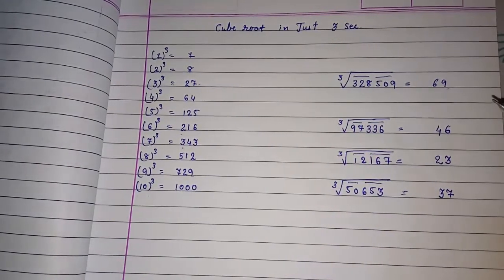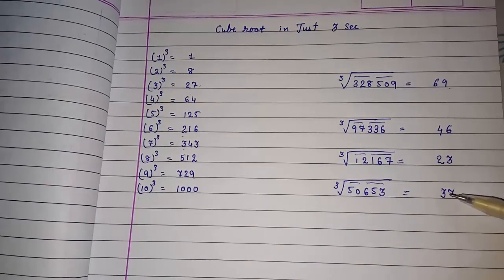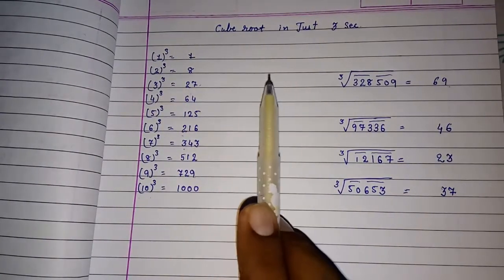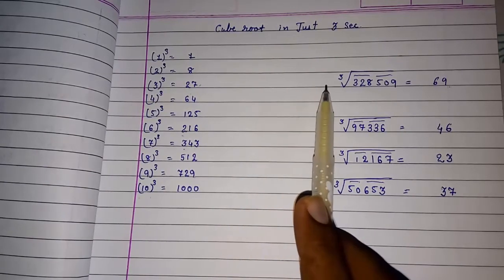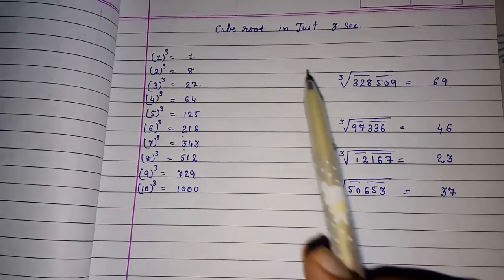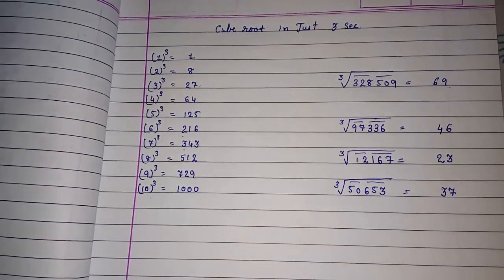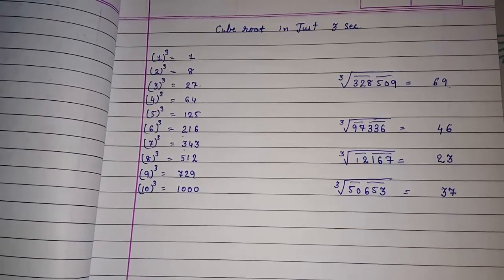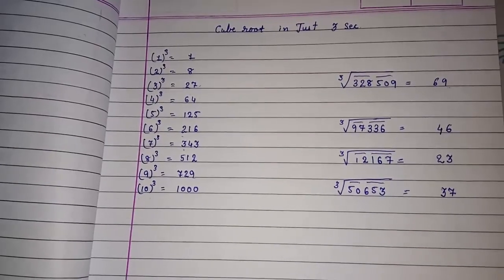And look how easily we had find out the cube roots without doing much effort. This method is called finding the cube root by estimation method. By this method, we can find out the cube root of any number in just 3 seconds. Thank you so much for watching my video. If you like it, please subscribe to my channel so that I can bring more such videos for you. Thank you so much.